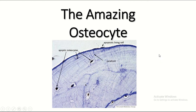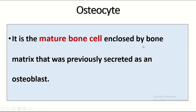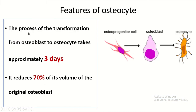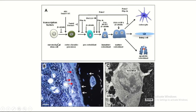Welcome to the Easy Human Anatomy channel. In this video, I discuss the osteocyte — the mature bone cell enclosed by the bone matrix that was previously secreted as an osteoblast. The process of transformation from osteoblast to osteocyte takes approximately three days, and it reduces 70 percent of volume during the process of osteocyte formation.